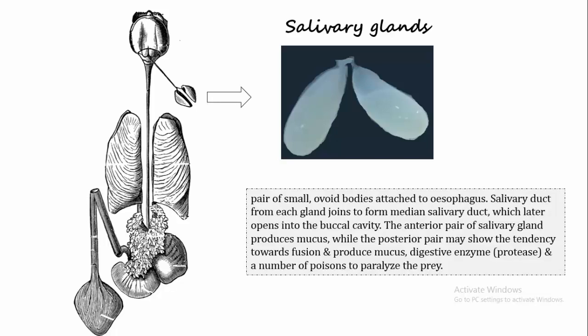Talking about salivary glands: salivary glands are a pair of small ovoid bodies attached to the oesophagus. The salivary duct from each gland joins to form a median salivary duct which later opens into the buccal cavity. The anterior pair of salivary glands produces mucus, while the posterior pair may show tendency towards fusion and produce mucus, digestive enzymes such as protease, and a number of poisons which are required to paralyze the prey before digestion.